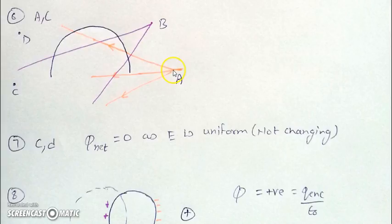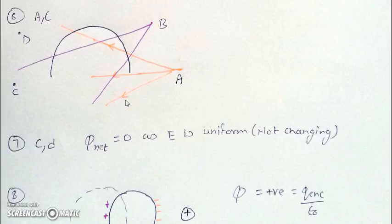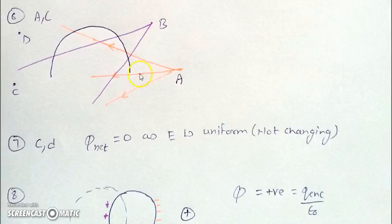If we place a charge at A or C, the field lines of this charge placed at A will either completely pass out of the sphere, or will enter the sphere and leave the sphere. So the net flux due to all the field lines emanating from A will be zero.